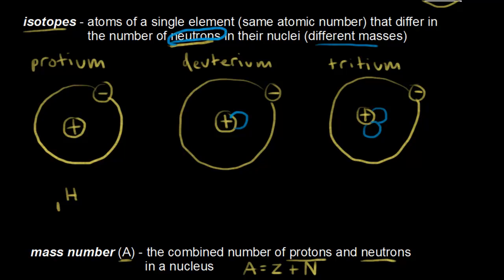For protium, in the nucleus there is one proton and zero neutrons, so one plus zero gives a mass number of one. The subscript is the atomic number — Z, which is one — shown in magenta, and the superscript is the mass number — A, which is one — shown in red. This symbol represents the protium isotope.